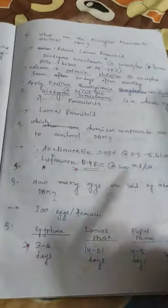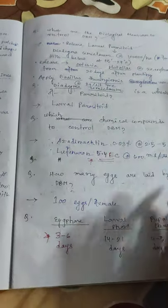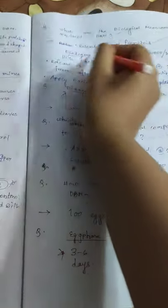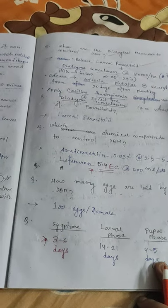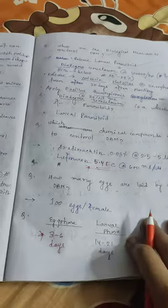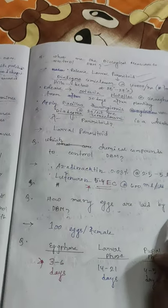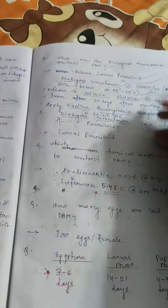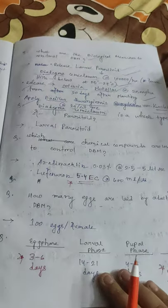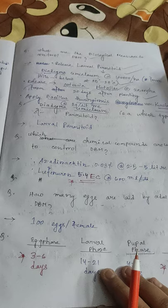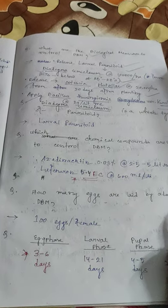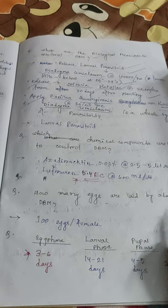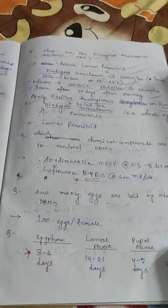Biological measures to control DBM: release the larval parasitoid Diadegma semiclausum at the rate of 1 lakh per hectare, effective below 25 to 27 degrees Celsius. Release Cotesia plutellae at the rate of 20,000 per hectare. Apply Bacillus thuringiensis var. kurstaki at the rate of 2g per litre.